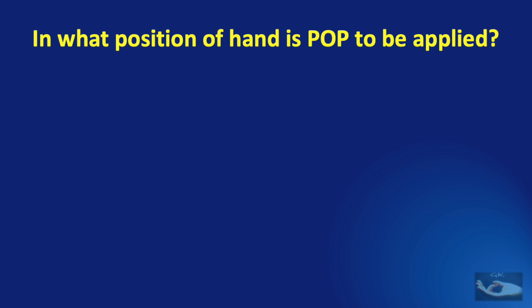So far we have seen on which side of the hand the POP needs to be applied and what should be the length of the POP. But what we have not seen is what should be the position of the hand in which it is going to be immobilized. This is very important because it may determine the outcome of the treatment. We shall now see what are the different positions in the hand.